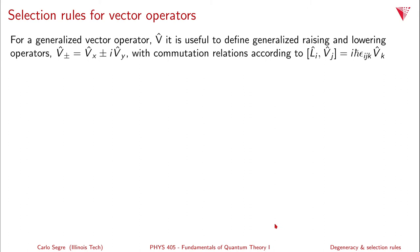For a generalized vector operator V, we start looking at what selection rules apply. It's useful to define generalized raising and lowering operators V plus minus, which equal Vx plus or minus i Vy — the usual definition. These have commutator relations according to the table from a previous video: the commutator of L sub i and V sub j equals i H-bar epsilon_{ijk} V sub k. As long as i, j, k are in cyclic order, epsilon is one; any transposition gives a negative sign.